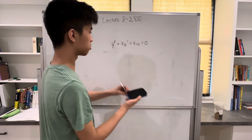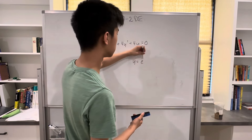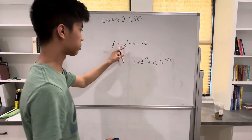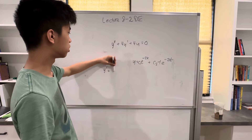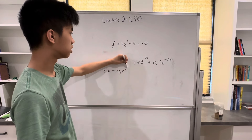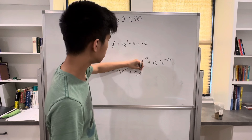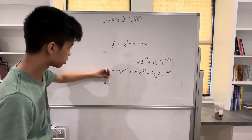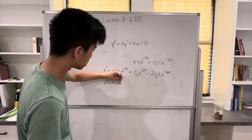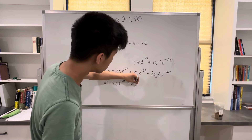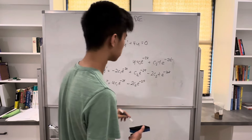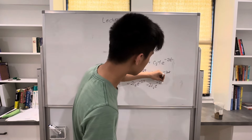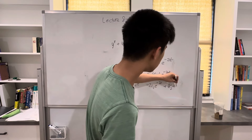Let me verify that plugging this solution in actually works. We have y = c₁e^(-2t) + c₂te^(-2t). So y' = -2c₁e^(-2t) + c₂e^(-2t) - 2c₂te^(-2t). Then y'' = 4c₁e^(-2t) - 2c₂e^(-2t), and when we differentiate the t term, another -2c₂e^(-2t), plus 4c₂te^(-2t).